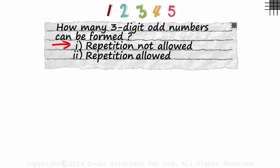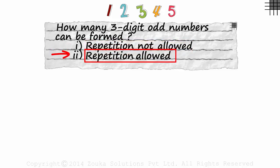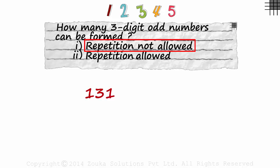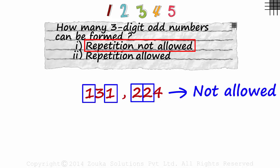First case: when repetition is not allowed. And second: when repetition is allowed. By repetition not being allowed, they mean we cannot consider numbers like 131 or 224 which have repeated digits.